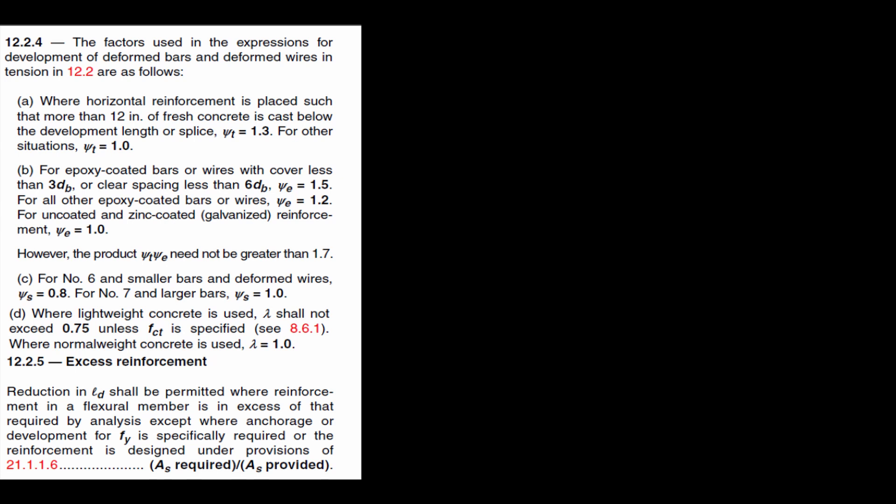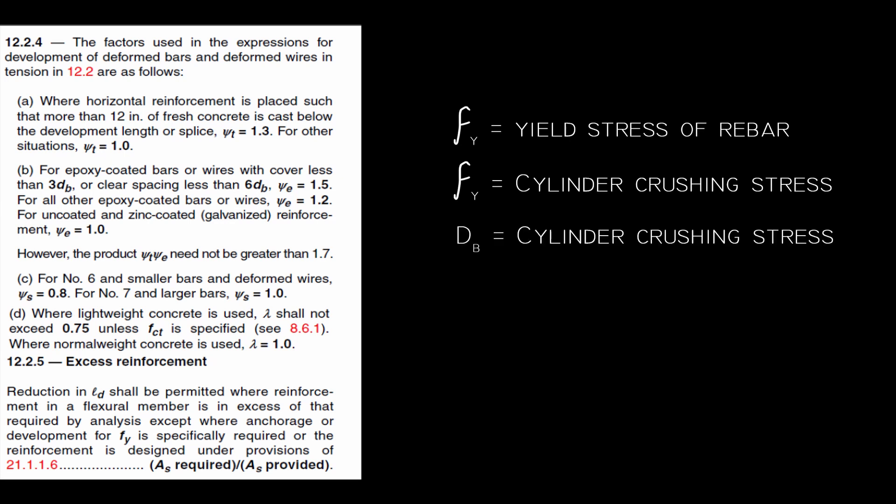For completeness sake, fy is the yield strength of the rebar in psi, fc is the cylinder strength in psi, db the bar diameter in inches, and lambda is some factor for lightweight concrete. Usually it's 1.